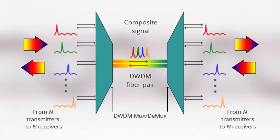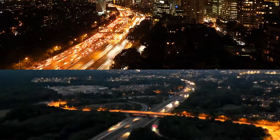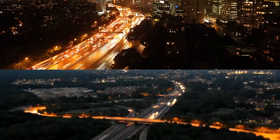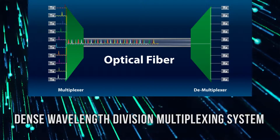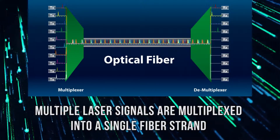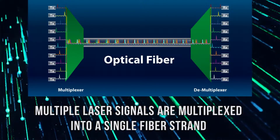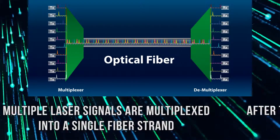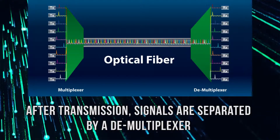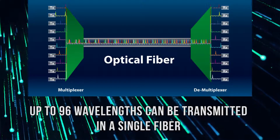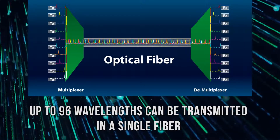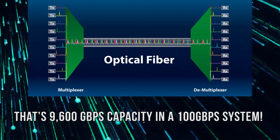Optical Wavelength Service uses Dense Wavelength Division Multiplexing, or DWDM, to transport multiple wavelengths in a single strand of fiber. Multiple laser signals at different wavelengths are multiplexed together and transmitted into a single fiber. DWDM enables the transmission of up to 96 wavelength channels in a single fiber.